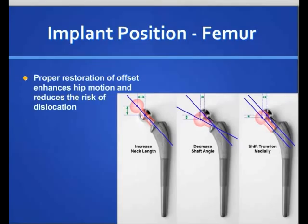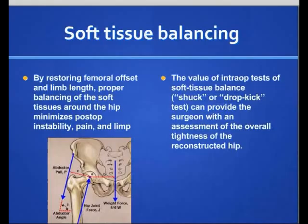Soft tissue balancing is important, particularly the tension and function of the soft tissues. Templating helps with restoration of the offset. There are other intraoperative tests that can be done, like shuck tests or dropkick tests, that help in assessing the overall tightness of the hip construction. Soft tissue function is important to help achieve a stable hip.